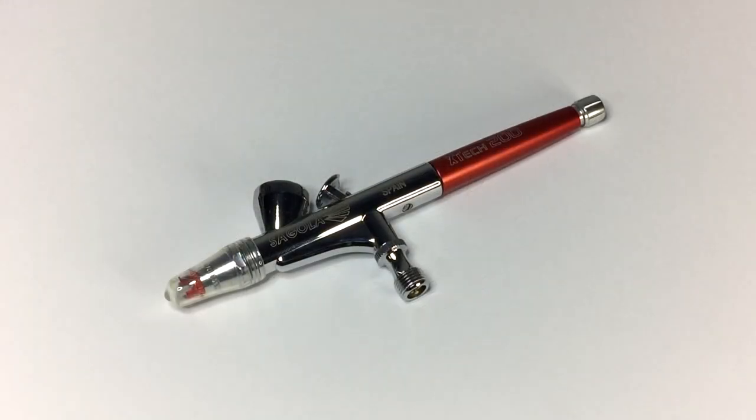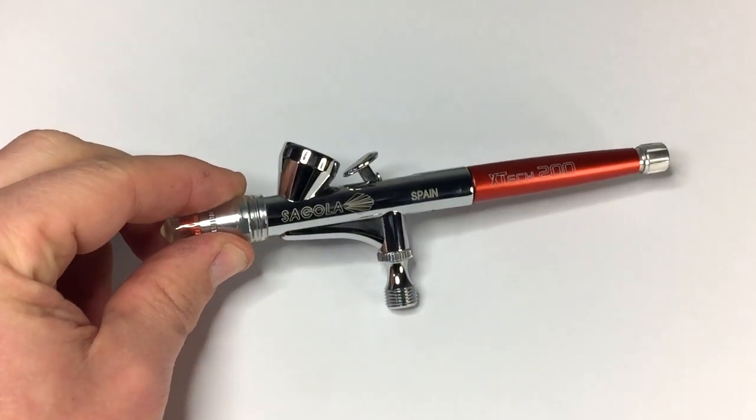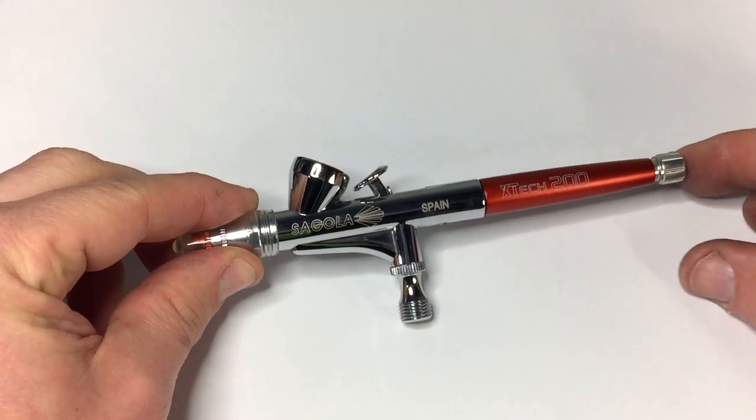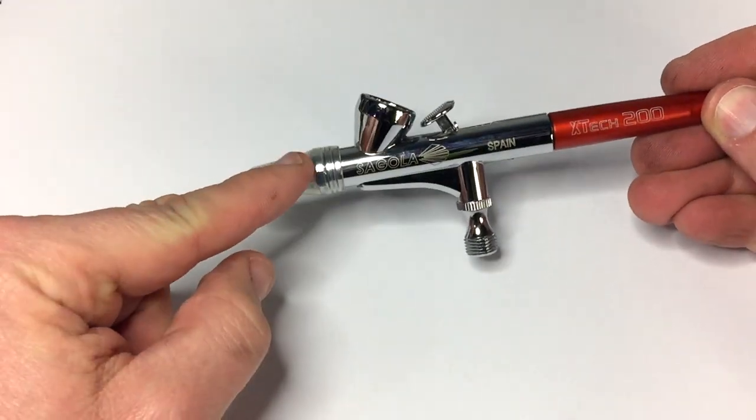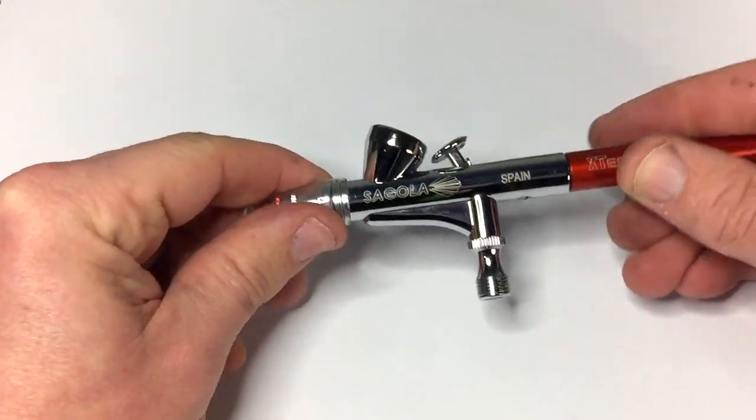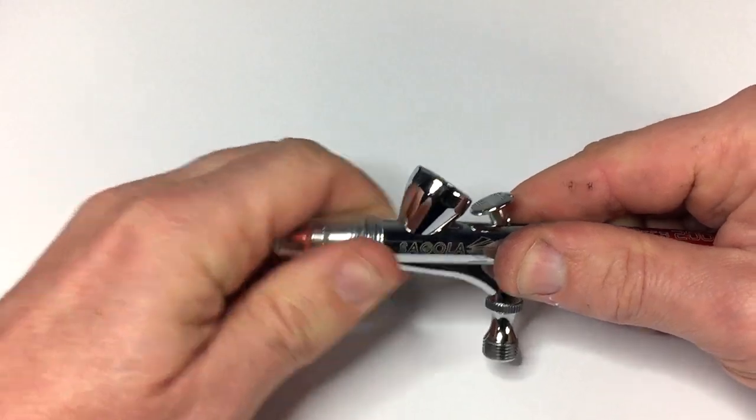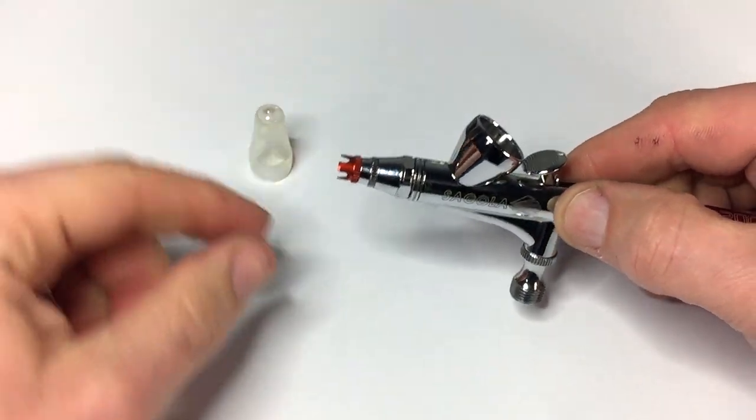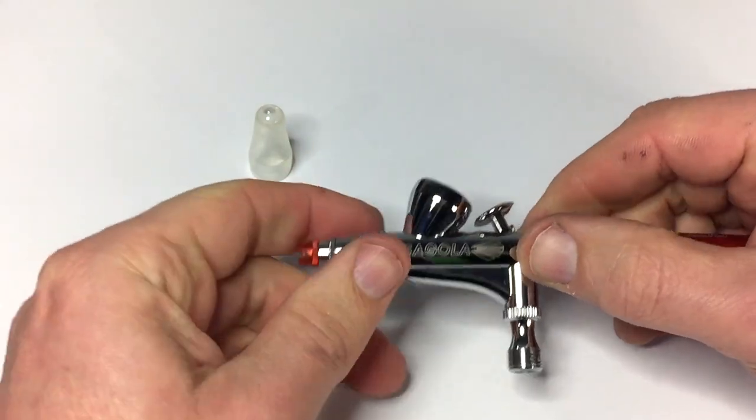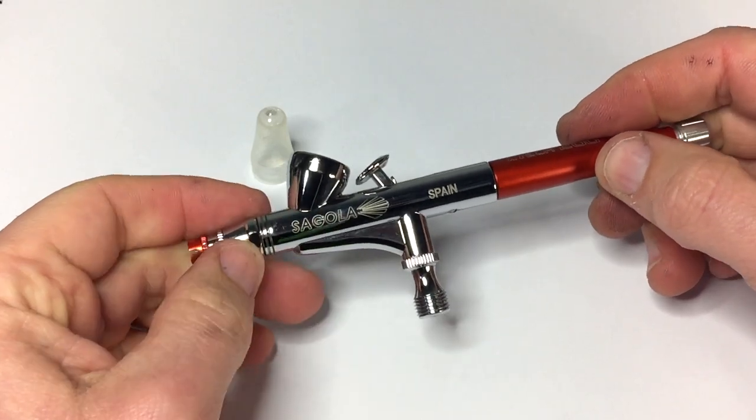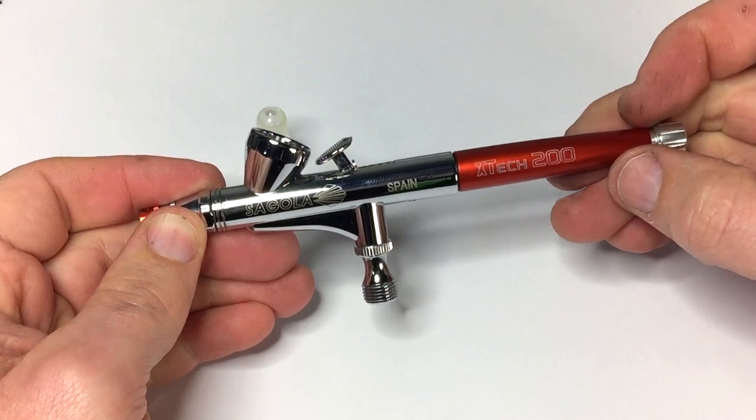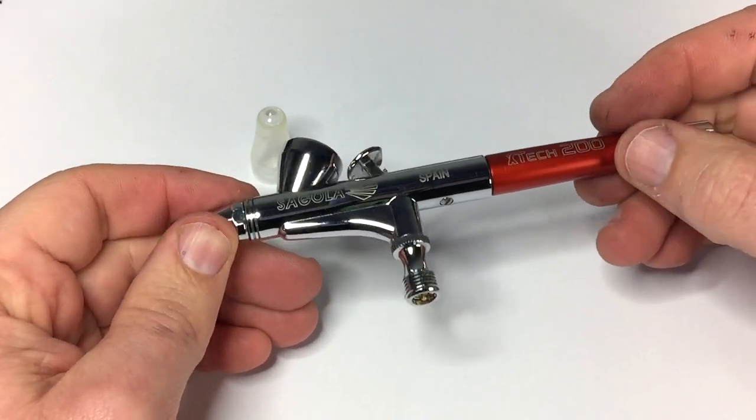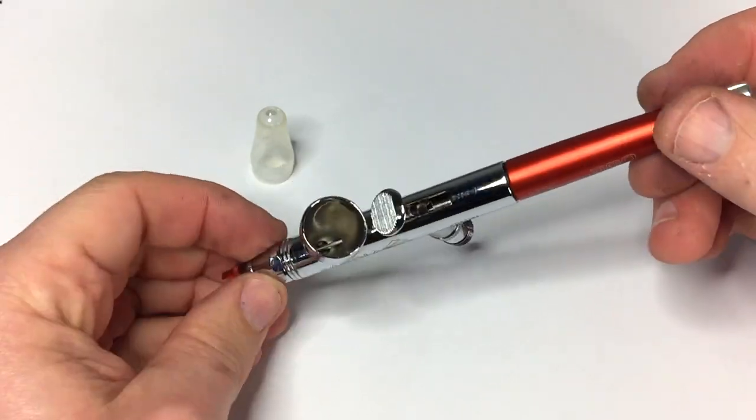Let's take a closer look at the Segola X-Tech 200 gravity feed airbrush. You can see the protector cap on the front, which is really cool. It's got the signature crown cap, the Segola engraved lettering, as well as on the rear of the handle here in the anodized red look, which is pretty cool.